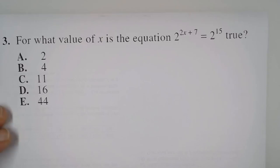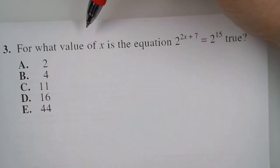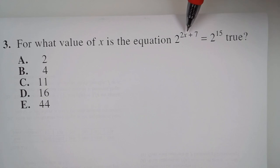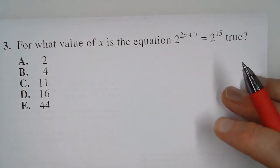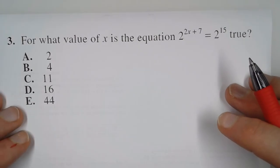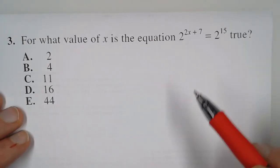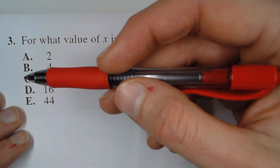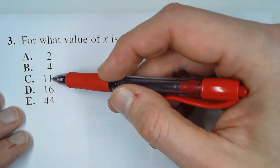Problem 3 asks: for what value of x is the equation 2^(2x+7) = 2^15 true? If you blank on this, one thing you can do is try plugging in numbers for x. I always recommend plugging in the middle number first.